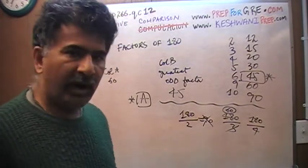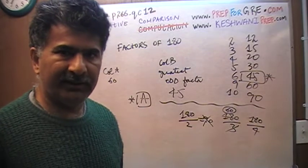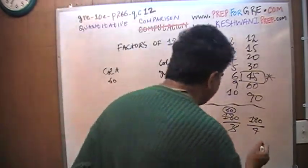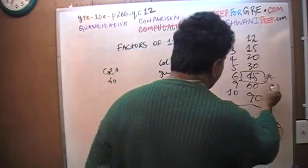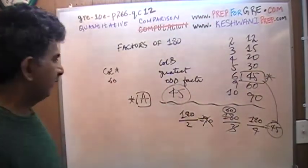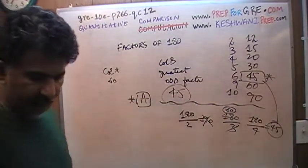And the reason we're dividing by the smallest factor possible is because we're looking for the largest number. I know half of 180 is 90 and half of 90 is 45. That is your greatest odd factor right here. So in the second column, we have 45, in the first column, we have 60. The answer is A.